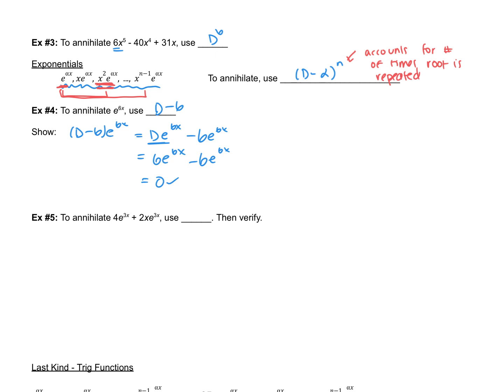With the annihilator we should always get down to zero. For the next example, our alpha is 3, so we get D − 3. Because of the x in x·e^(3x), that means the root happened twice, so the annihilator is (D − 3)².